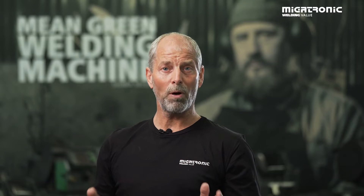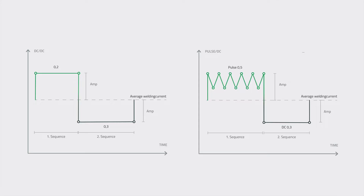Our PowerArc Pulse is the new way of welding in pulse mode. We have a fixed frequency. We have done something in our software that creates a lot of pressure on the arc, so that means the wire speed has increased and the voltage has been lowered. That's why you can gain speed welding with our PowerArc Pulse.